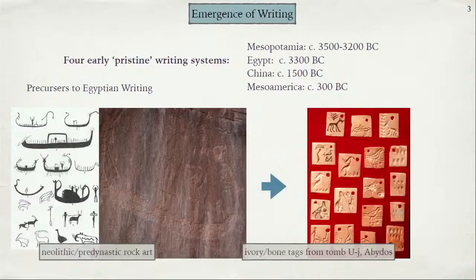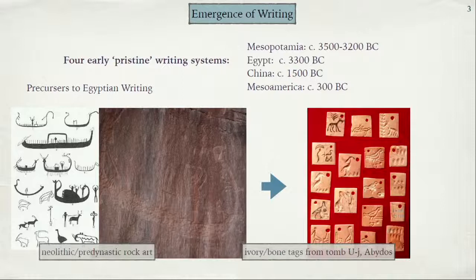So today what I wanted to do is talk a bit about where writing comes from, the different stages of Egyptian writing, and then give you a bunch of examples of how Egyptian writing was used. There will be a lot more pictures today than there were yesterday — pictures of hieroglyphs, pretty pictures. So if you found yesterday's lecture a little too technical, this one will be much more pleasing to the eye, I promise.